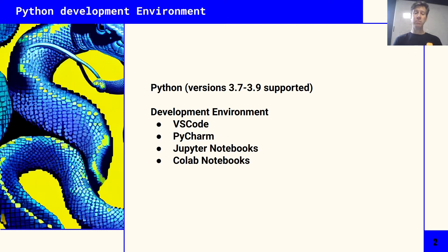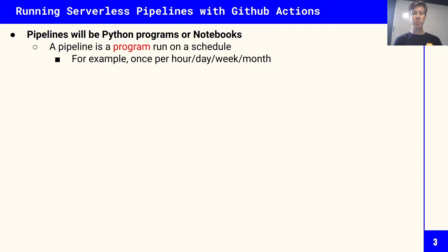We will be using Notebooks, but VS Code and PyCharm support notebook execution as well. We're going to be running Python programs as what we call pipelines, and we're going to use GitHub Actions as a platform to run those programs. The reason we use the term pipelines is you can think of a pipeline as a program that's run on a schedule, when it's needed, or when some data arrives.